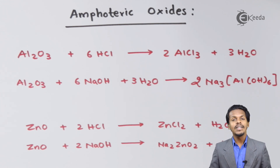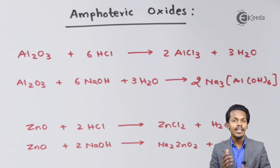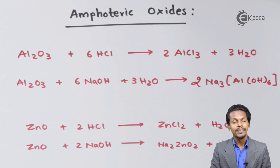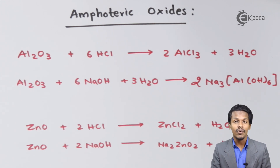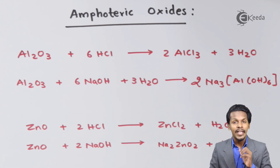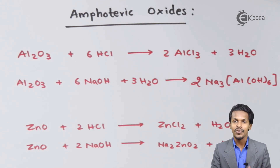The last classification is neutral oxides. Neutral oxides are neither acidic nor basic in nature, which is why they are called neutral oxides. Examples include carbon monoxide (CO), nitric oxide (NO), and nitrous oxide (N2O). These three oxides fall under the category of neutral oxides, and these were all the examples related to the classification of oxides.